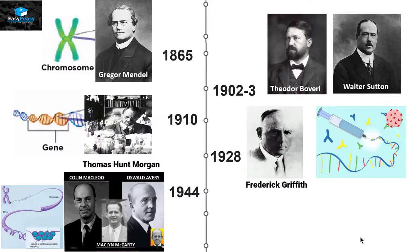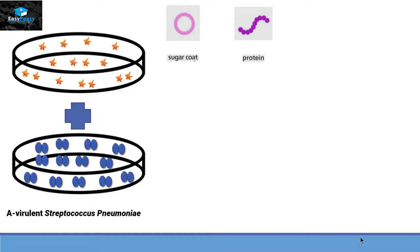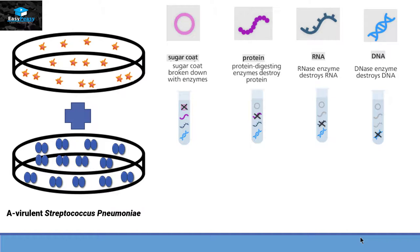The bacteria have a sugar coat and are made up of proteins, RNA, and DNA. So before mixing the two colonies with each other, they added different types of enzymes into each test tube to remove a certain component present in that bacteria. In one test tube they removed the sugar coat, in another they removed the protein, in another they removed the RNA, and from the last test tube they removed the DNA.